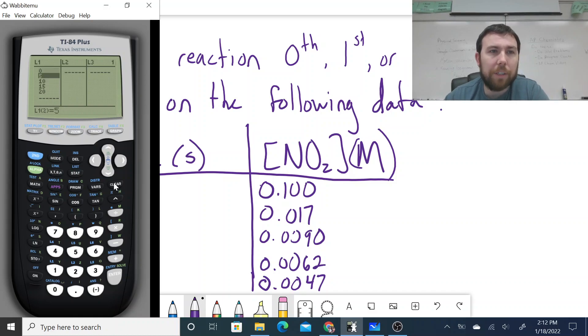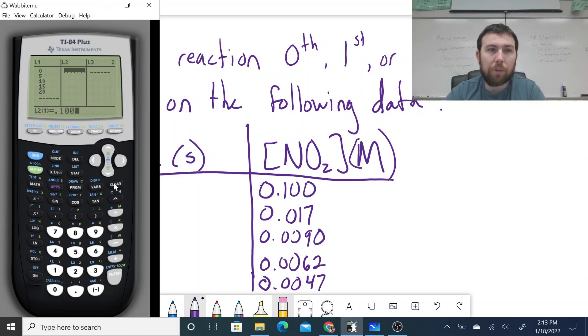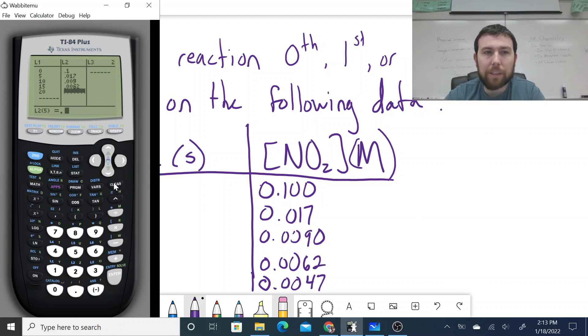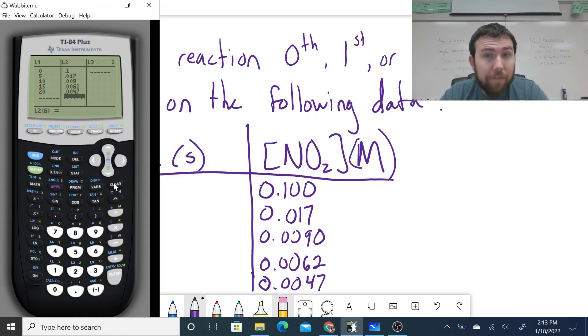Now, the next thing that we're going to want to do is in our next list, we're just going to click over. We're now in L2. This is going to be our Y variable that we're going to be taking a look at. And so now I want to input the concentrations that were provided to me in the table. So at time equals zero, my concentration was 0.100 molar. Now notice in the list, it's not going to give you all the significant digits. That's okay. But I'm just going to put them in anyway. So then we've got 0.017, then I've got 0.0090, then I've got 0.0062, and I've got 0.0047. So from there, I've input all of my information with respect to the concentration.